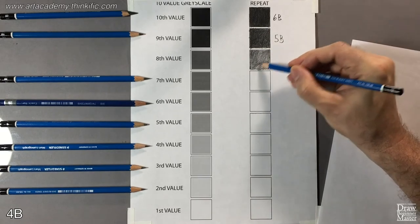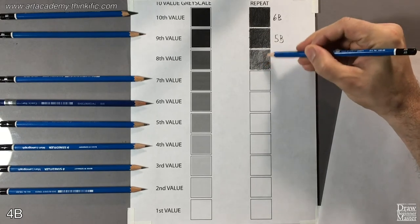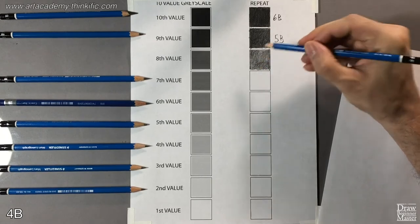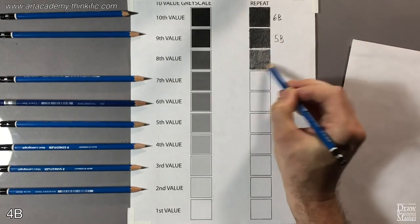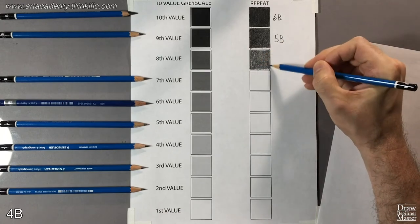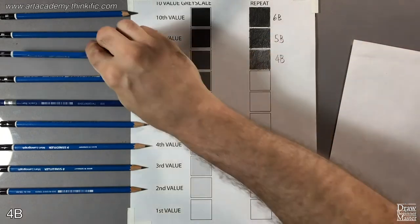That looks about right. If you're having trouble telling if your square is the same value as the printed square because of the pencil grain, squint your eyes and look at it. That'll help you see the average value. And when you're done, be sure to label it with the pencil you used.